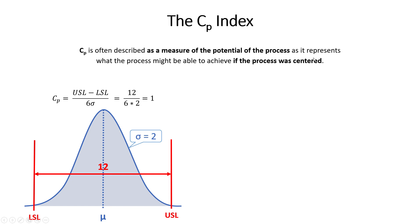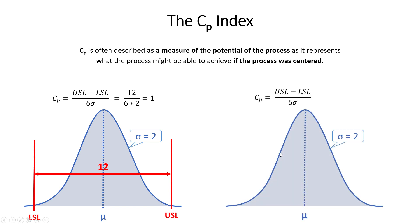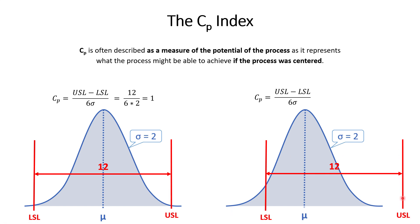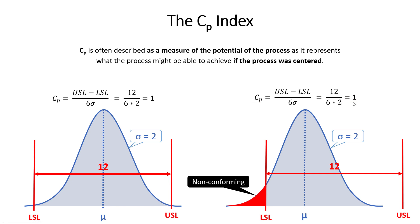Now let's take our exact same process — same standard deviation of 2 — but the process shifts to the left and is no longer centered. The width of the distribution is still 12 and the standard deviation is still 2, but a large portion of the distribution is now nonconforming. Yet when we work through the equation, the CP value still comes out to 1 — the same answer. This shows that CP only tells you what your process might achieve if it were centered.